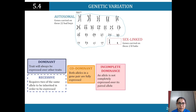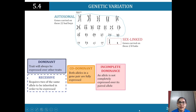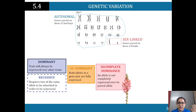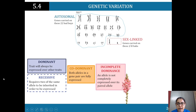Incomplete dominance is when an allele is not completely expressed over its paired allele. For example, with flowers: if a red flower and a white flower mate, incomplete dominance means neither allele fully wins — you end up with a pink flower. With co-dominance, you'd see red and white together, not blended. If red were fully dominant, you'd get a red flower; if white were recessive, white would not appear.